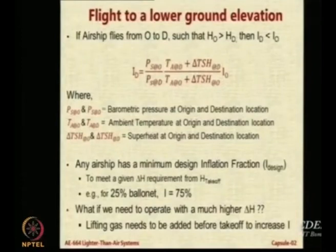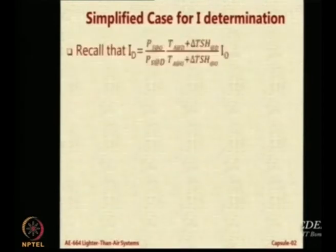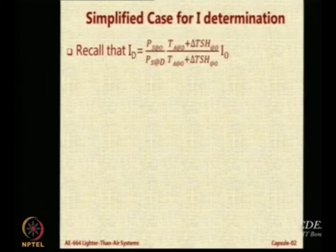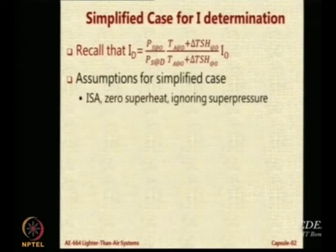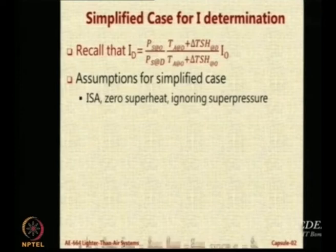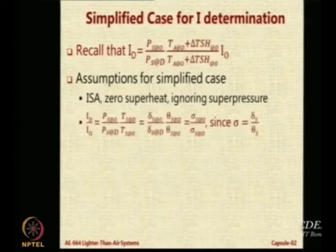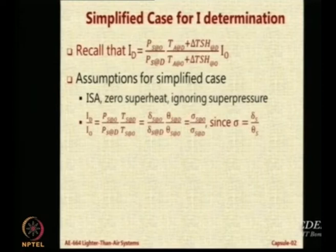What do I do? I have already given the answer in my initial discussion: the only option is to change the lifting gas — you have to add lifting gas before take-off to take care of the height difference. Let us look at this formula with some simplification: superheat will be ignored and ISA conditions will be considered. Under ISA conditions you have a fixed pressure at sea level. So ID divided by IO — the inflation fraction at destination upon that at origin — is equal to PS at O, with the additional delta TSH terms removed, giving PS and TS.